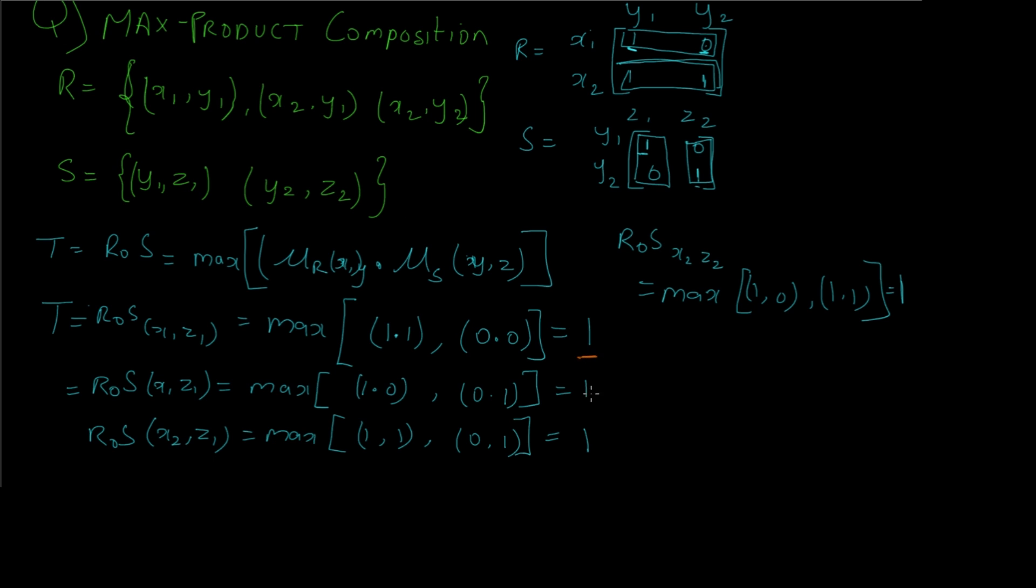So now we have found all the four terms of the composition relation. So the final answer can be written as a matrix where the columns are the z values and rows are the x values.